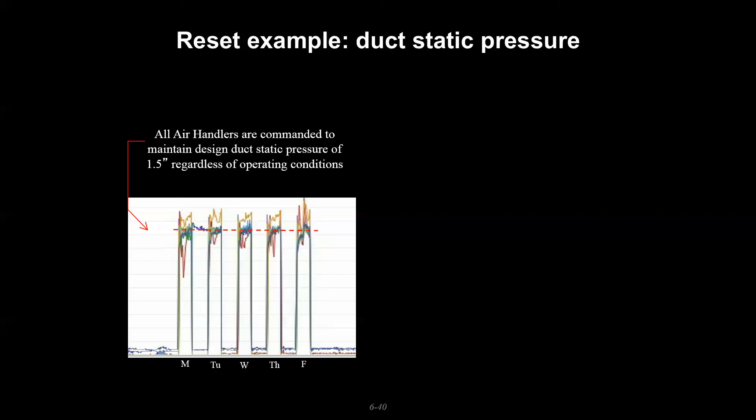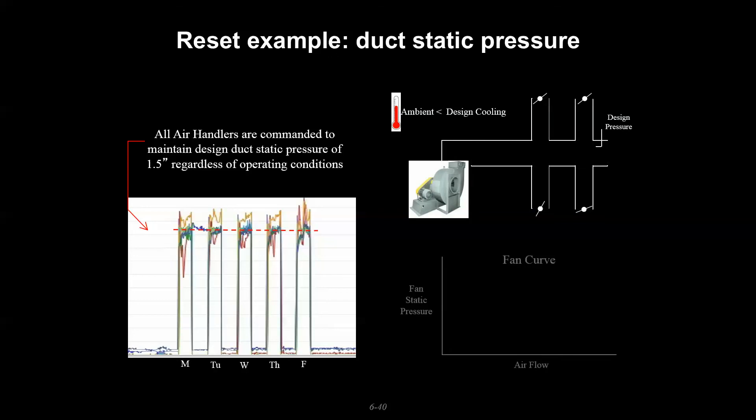By definition we're not going to see those design loads at all times, so what happens when we have a lot of boxes that have their damper closed? We have a system curve that's a little bit steeper and we're creating artificial pressure drop by having that duct static pressure setpoint so high. If we could reduce the duct static pressure setpoint or reset it down from one and a half inches to some smaller number, we'd be able to meet the CFM requirements at reduced pressure and have some fan savings.